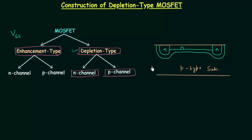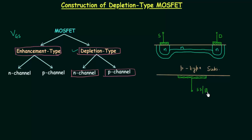Now let us talk about the metal contacts. We have four terminals in the case of MOSFET. The first terminal is the source terminal with its metal contact, then we have the drain terminal represented by D, then the substrate or body terminal, and the remaining terminal is the gate terminal.